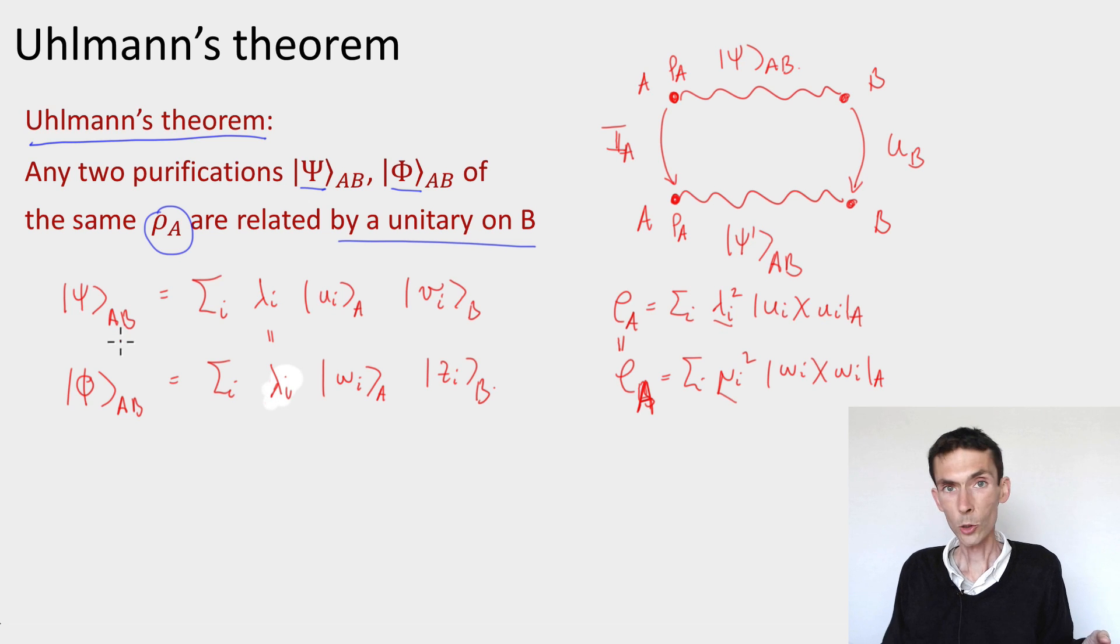Both for ψ and φ, because they have the same reduced density. And so again, I can ensure in this way that the Schmidt vectors on A are the same, the u_i's equal to the w_i's. So here is what I can always write my Schmidt decompositions like.